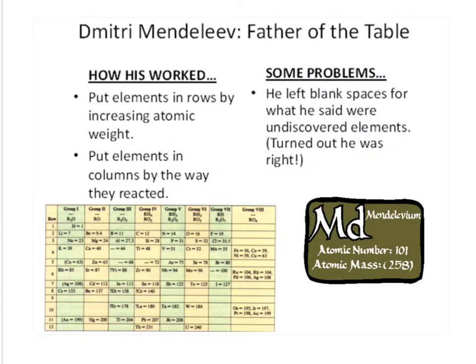The first person to start organizing the periodic table was Dimitri Mendeleev. He's known as the father, and he did a pretty good job. He put his elements in increasing atomic weight and by the way that they reacted, and it was okay, but there were some problems.